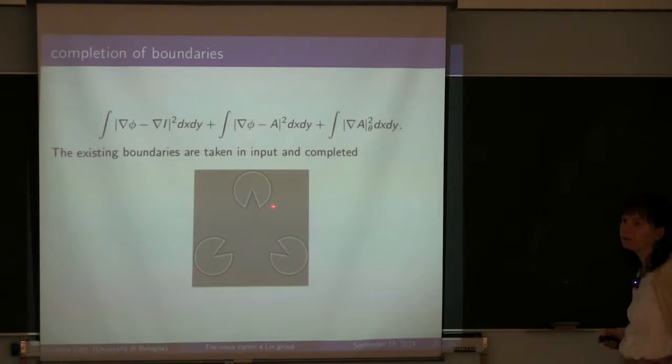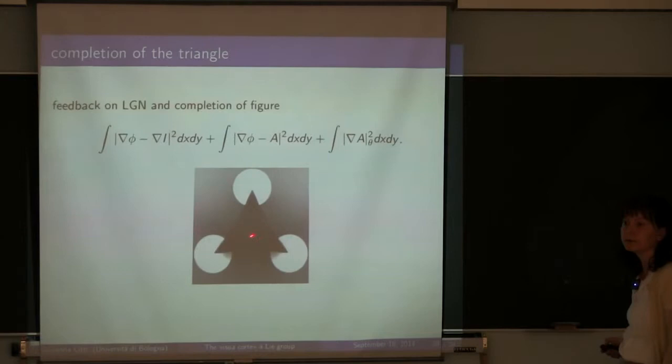These were the existing ones, and these boundaries are the completed ones. But now we have both the existing and the completed boundaries. We can apply again the retinex model with the whole set of boundaries, the existing one and the subjective one. While doing this, we obtain the triangle. This is what we perceive.